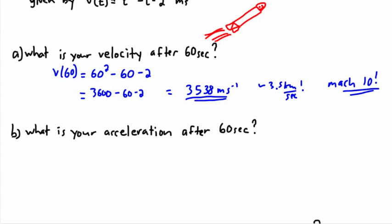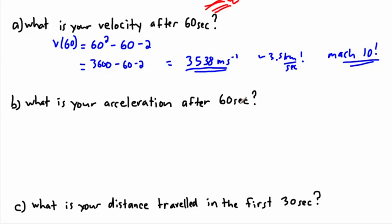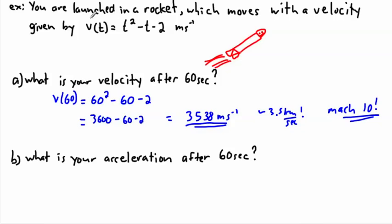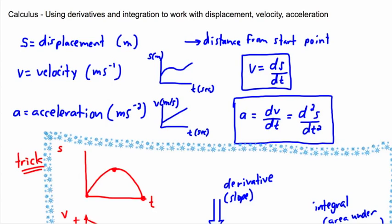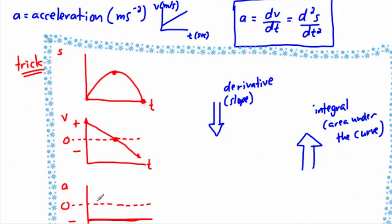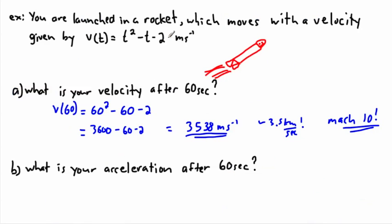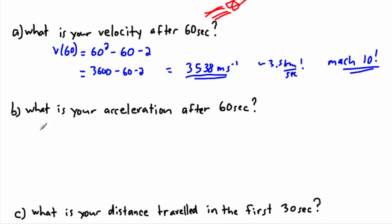That would be a heck of an acceleration. So what is your acceleration after 60 seconds, and how would you feel in that rocket? We have an equation for velocity and we want acceleration, so we go 'down' and take the derivative — acceleration is the derivative of velocity.